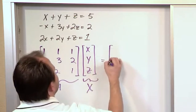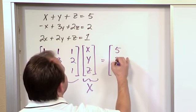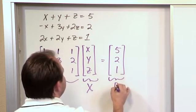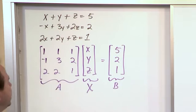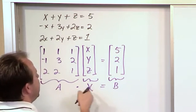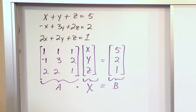And then on the right-hand side, I put the numbers 5, 2, and 1. And we call this the matrix B. So we say Ax is equal to B. That's how you typically see it written.